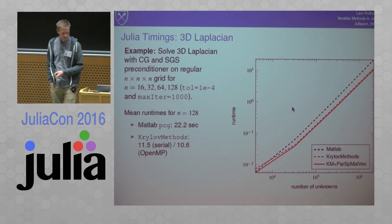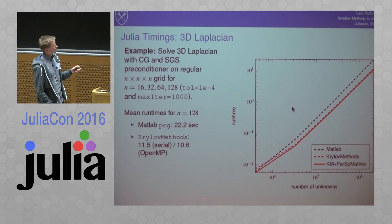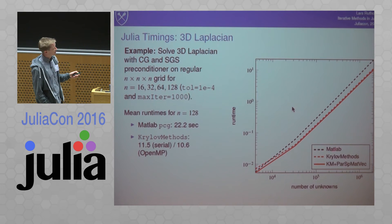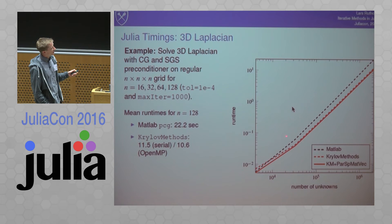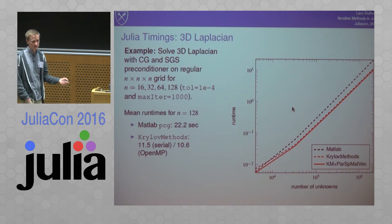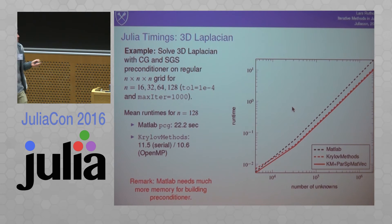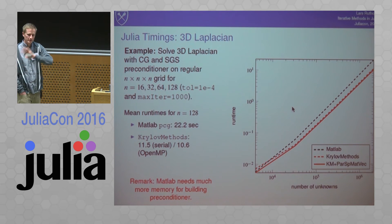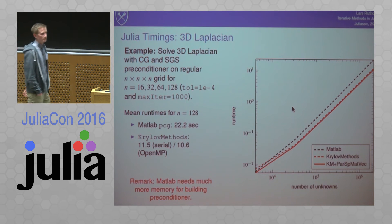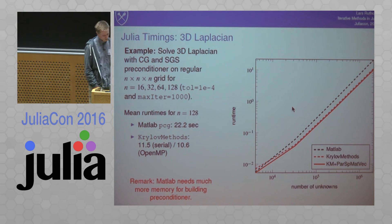That's also an advantage over MATLAB. In MATLAB — I tested this on my machine, wall clock time — KrylovMethods.jl with the SSOR preconditioner is faster and more memory-efficient, because in MATLAB you have to extract the upper and lower parts of the matrix, basically doubling or more than doubling the memory you need. So there, Julia really pays off.